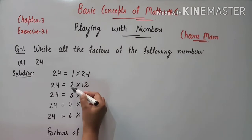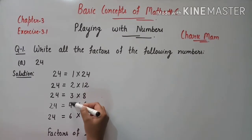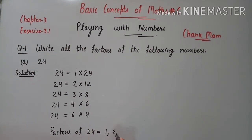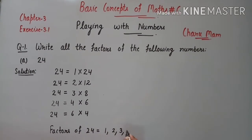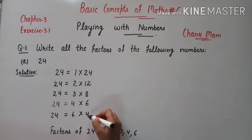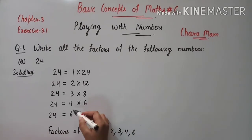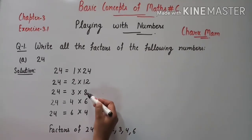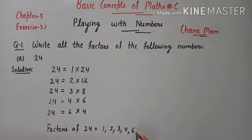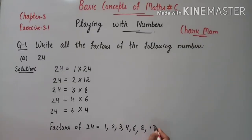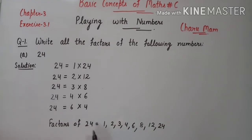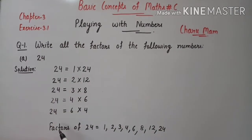So the factors of 24 are 1, 2, 3, 4, 6, 8, 12, and 24. We find out 4 and 6 first, then 8, 12, and 24. This is how we find the factors.